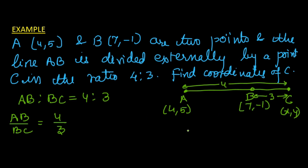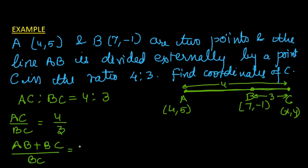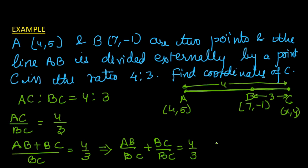AC is the distance of the endpoints from the point of division, so AC:BC = 4:3. Now AC can be written as AB + BC, so (AB + BC)/BC = 4/3. Dividing each term of the numerator by BC gives AB/BC + 1 = 4/3.